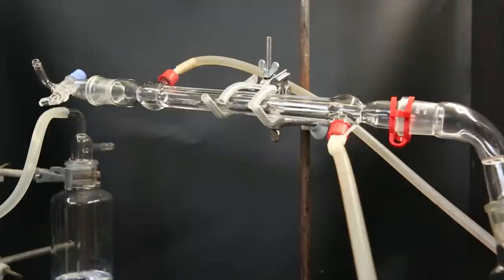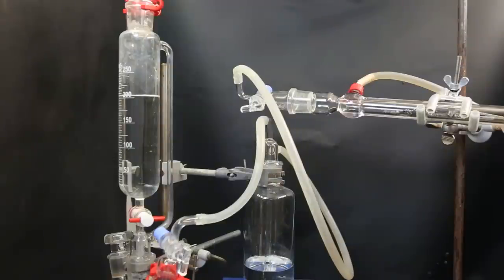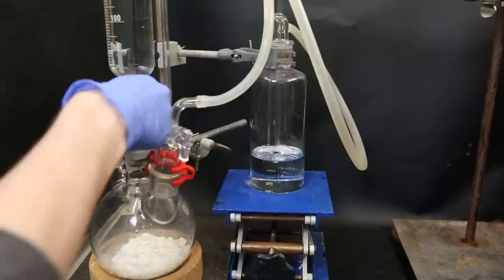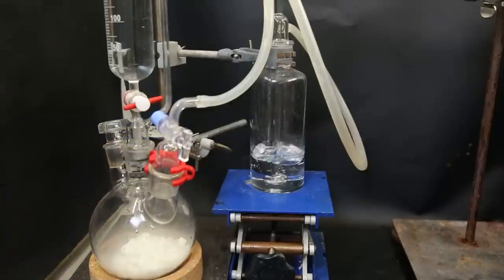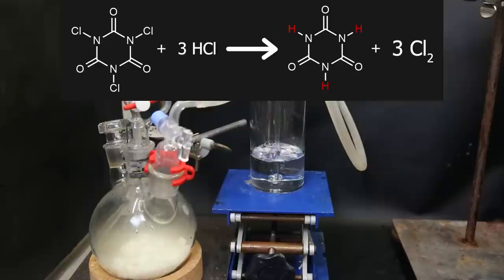When all of the arsenic has been added, I attach a gas adapter to the left side of the column. I then connect this to the other side of the gas washing bottle. Now that the setup is complete, I can start the reaction. So I stopper the dropping funnel, and then add some of the hydrochloric acid to the flask with the TCCA. In this reaction, the chlorine from hydrochloric acid and the chlorine from TCCA react to form chlorine gas. While the hydrogen will take the spot the chlorine was before, to make cyanuric acid.